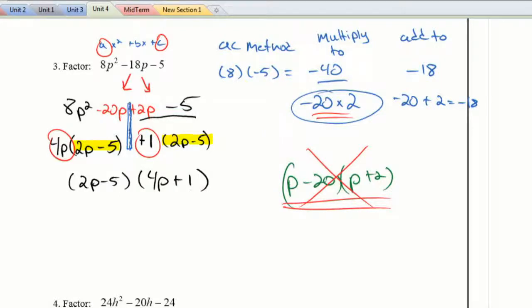Now, you'll notice that these two things are not equal. 2P minus 5 and 4P plus 1 is not the same as P minus 20 and P plus 2. Those are my two factors. So when we have something that has a number in front of my squared term, I can't just do the kind of quick method.